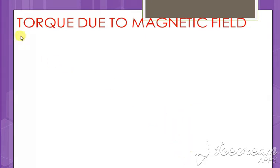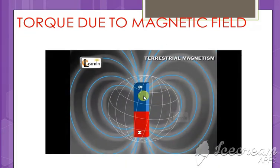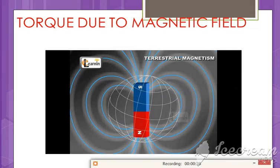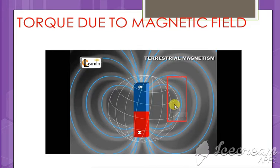Torque is what gives you a circular motion when you move any object inside the magnetic field. So for this, let us consider this to be the magnet and this to be the magnetic field. In this magnetic field, if you are going to place any object like this, then this object will experience a force. There are two poles — a north pole and a south pole.